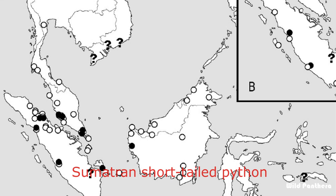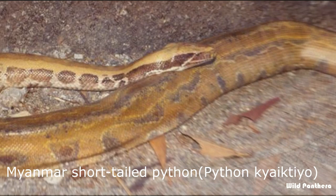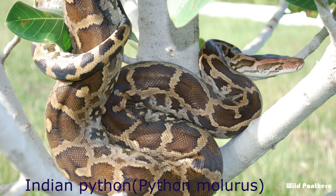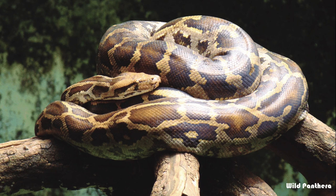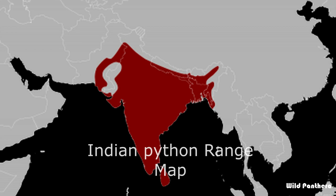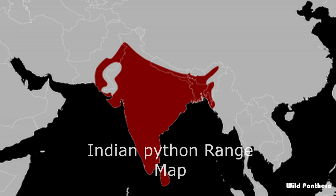Myanmar Short-tailed Python: This is a python species endemic to Myanmar. It has been listed on the IUCN Red List as Vulnerable since 2012. Indian Python: Python molurus is a large non-venomous python species native to tropical and subtropical regions of the Indian subcontinent and Southeast Asia. It is known by the common names Indian Python, Black-tailed Python, Indian Rock Python, and Asian Rock Python.